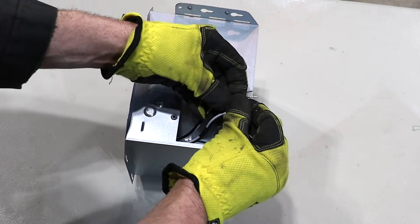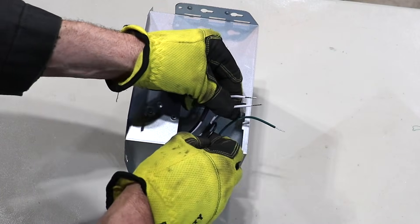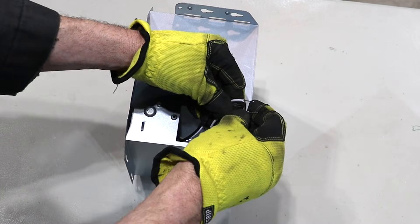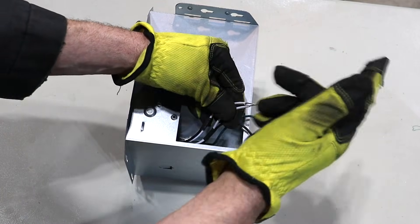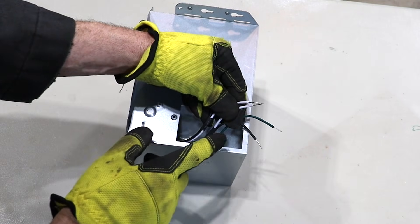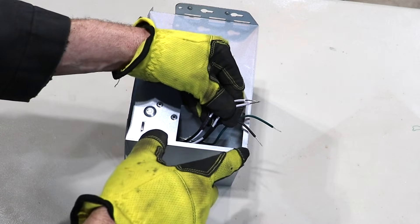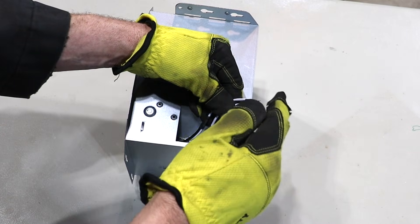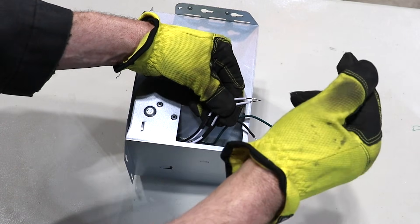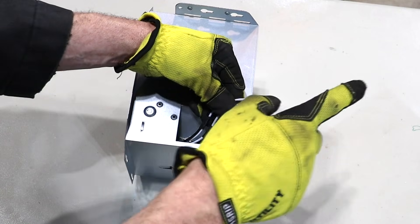And you already know as well the neutrals can just go together. The neutrals are only creating a path back to the panel box and you're never going to provide enough power to either one of the hots that these neutral wires can't handle the load going back.